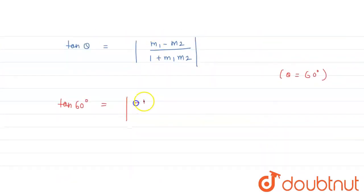So m1 is minus root 3, m2 we don't know, divided by 1 minus root 3 m2. And tan 60 degrees is root 3.